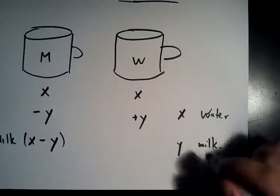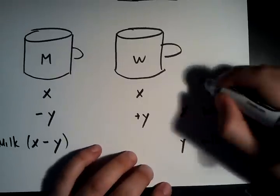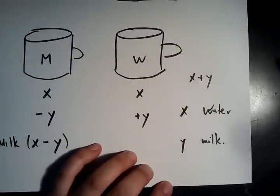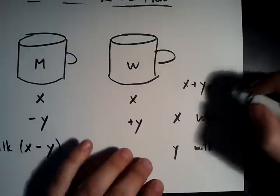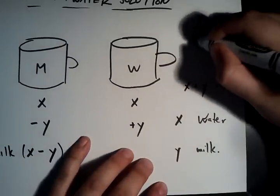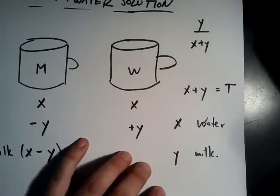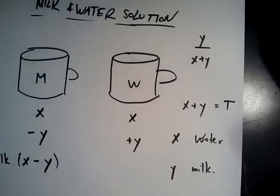And then you mix it all up. And what that does is that means our total volume here is x plus y. That's our total volume. And how much of that is milk? So the proportion is y over x plus y is the proportion of milk.